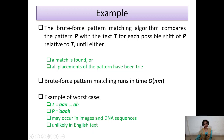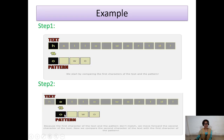If the pattern matches the text at the last occurrence, then we say that is the worst case. For example, the text is A A A ... A H and the pattern is A H. The match occurs at the last occurrence, so this is the worst case. The time complexity for brute force is O(nm). Pattern matching at first occurrence is the best case; at last occurrence is the worst case.